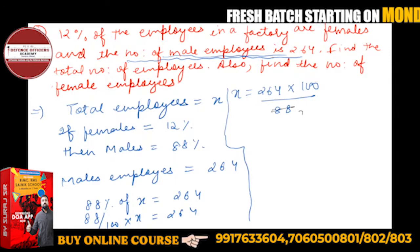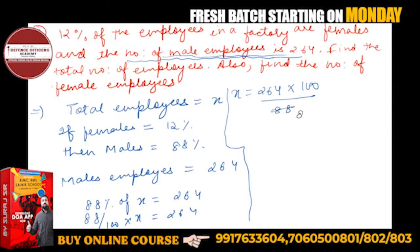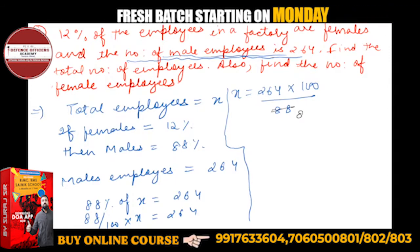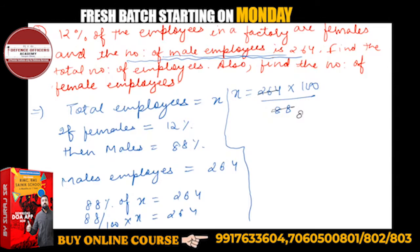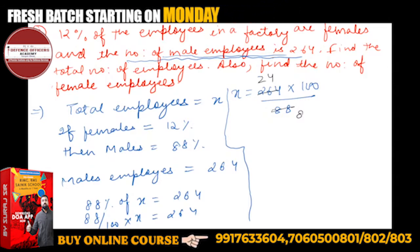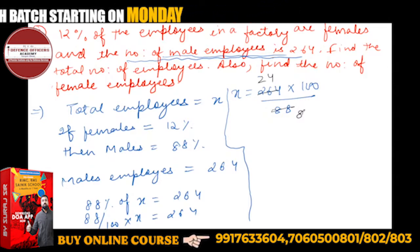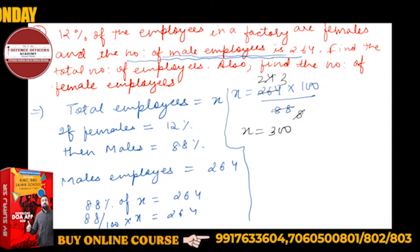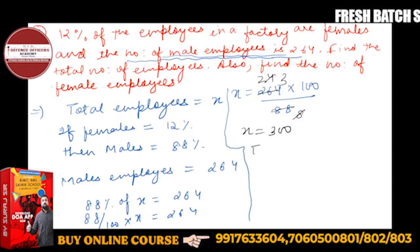Simplifying: 88 divided by 8 is 11, 88 divided by 4 is 22, then 44, and 8 into 3 is 24. So X is equal to 300. X = 300 is the total number of employees.